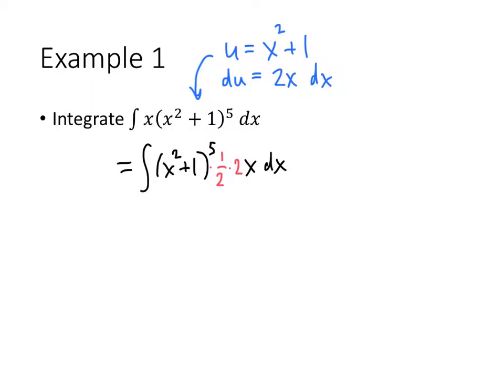Now I don't really want the 1 half, so I'm going to factor the 1 half out of my integral, and leave everything else in there. So x squared plus 1 to the 5th times my 2x, and now I'm ready to convert this from an x integral into a u integral.